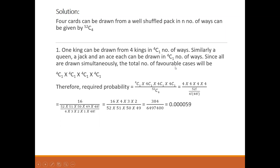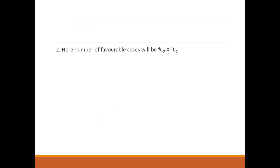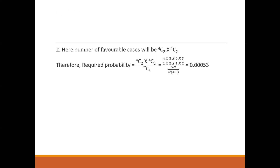Let us see the second solution as well. For two jacks and two kings, the number of favorable cases will be 4C2 multiplied by 4C2. The required probability formula becomes 4C2 multiplied by 4C2 divided by 52C4, which gives the answer as 0.00053.